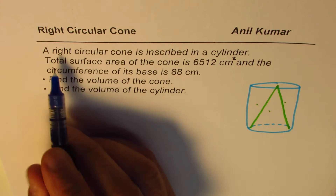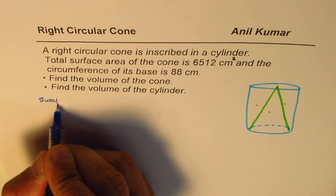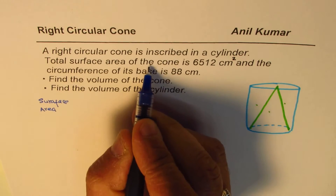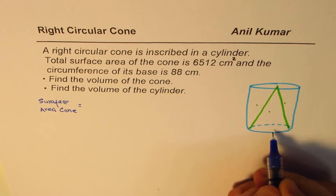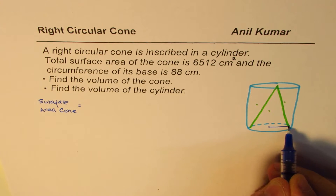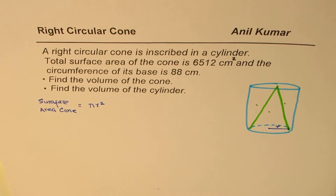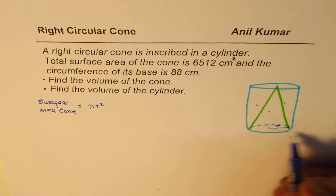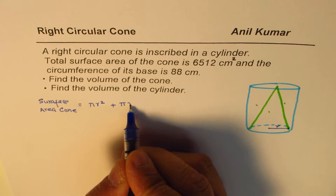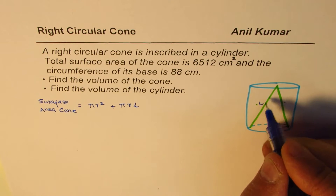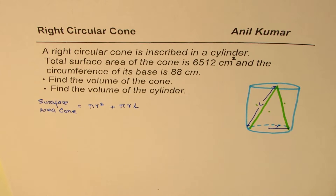Now let's see how to solve this question. What are we given? We are given the total surface area of the cone. The surface area of the cone is the bottom surface area — if I assume this to be of radius r, then this circle has an area of π r². Plus the lateral area: if you open it up it gives you a sector, and you can find the area to be π r l, where l is the slant height.